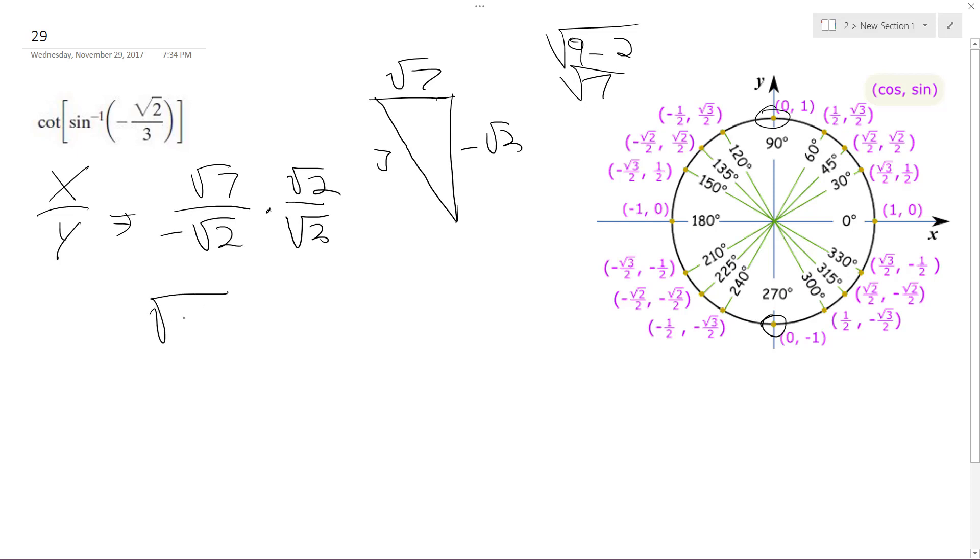And we're left with square root of 14, because I can multiply the radicals together, over negative 2. And that's the final answer.